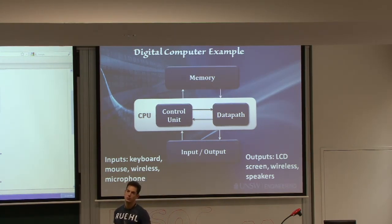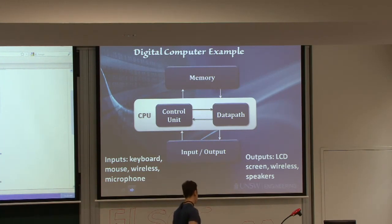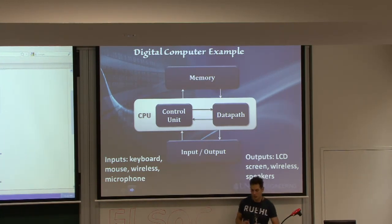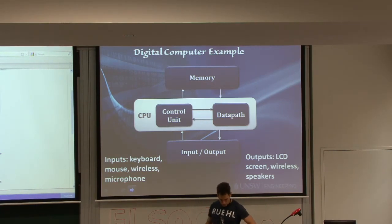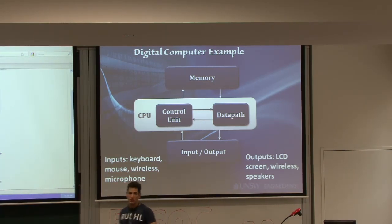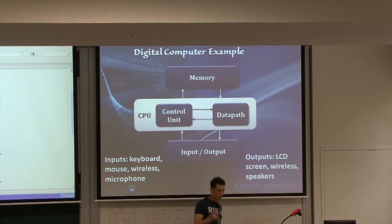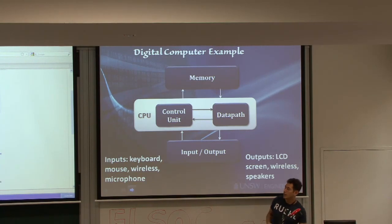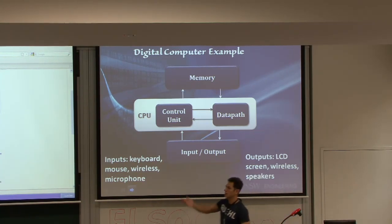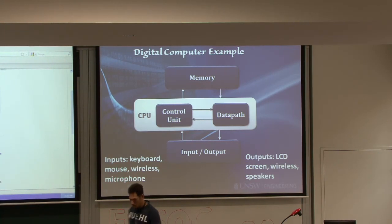The input devices to a computer could be the keyboard, the mouse, maybe wireless internet coming in, or a microphone. The outputs are naturally the screen. If you have a printer, that could be an output — speakers as well. And wireless internet could also be an output if you're transmitting something. So these are all the I/Os to your computer.